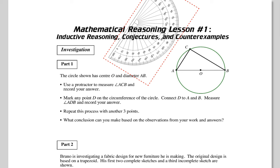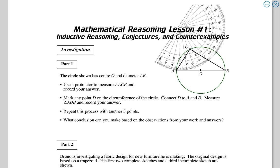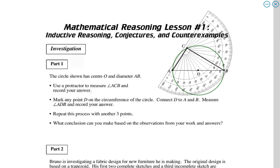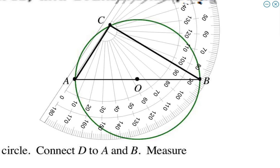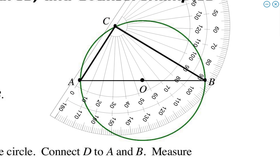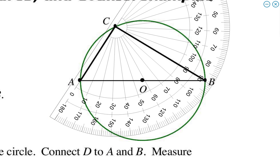You guys don't have protractors. We're going to follow the bullets here and do an investigation. The book does a pretty good job of this. They want you to measure angle ACB. So, I'm going to do that now. You guys don't have a protractor, so you can just watch me. What's the measure of angle ACB? 90, right? You guys okay with that?